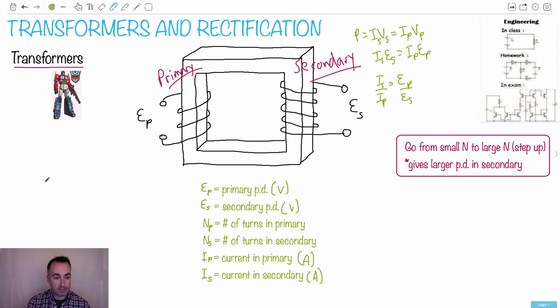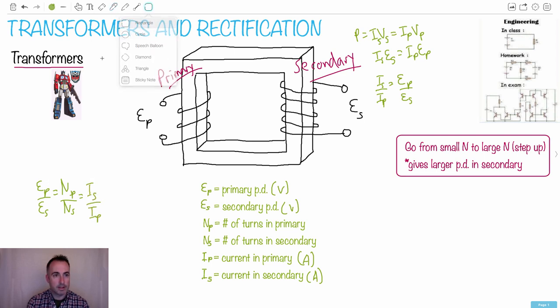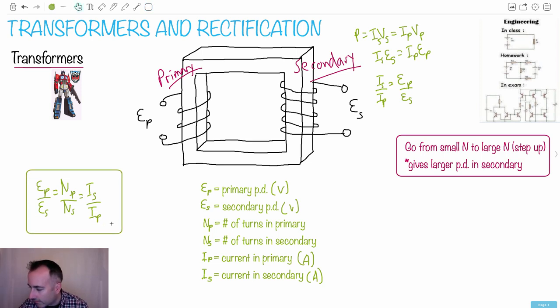The one that you get in your data booklet goes like this: εp over εs equals Np over Ns, which equals—and remember the currents do opposite of the voltages—Is over Ip. Let me just make sure I have it right. Yes, this is how it works. So basically, it depends. If you know the number of turns, you can find the currents. Or you might know the potential differences and want the currents, or want the turns. Basically, you need to be working with two of the three of these fractions. And that's how you can solve them. So they're not actually that hard.